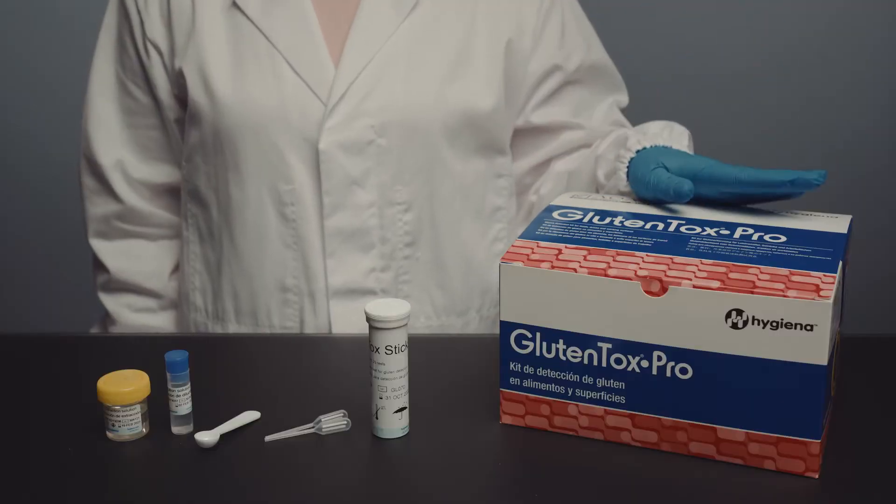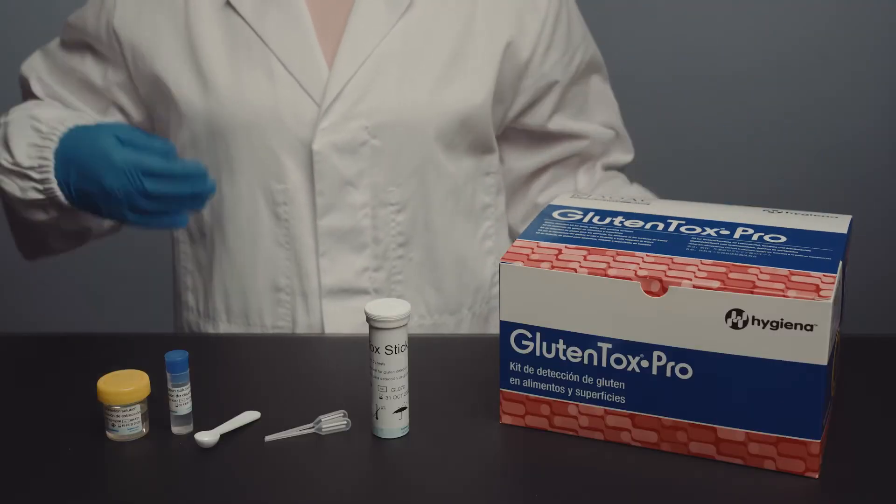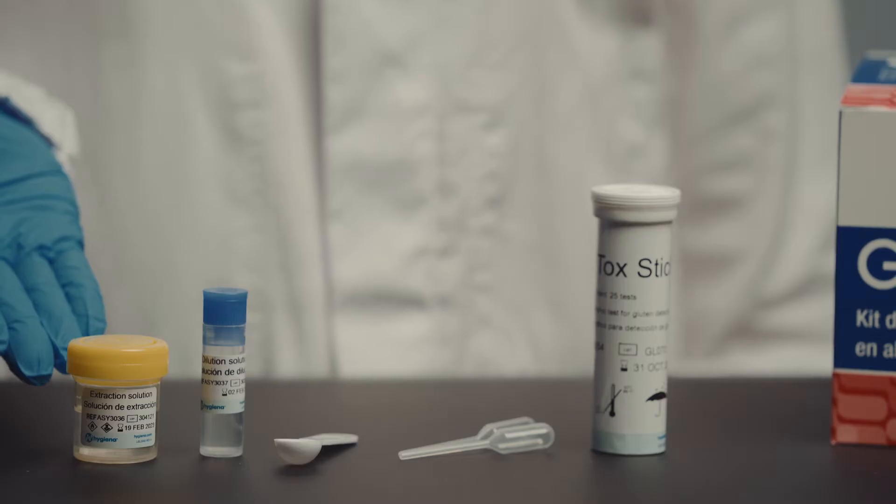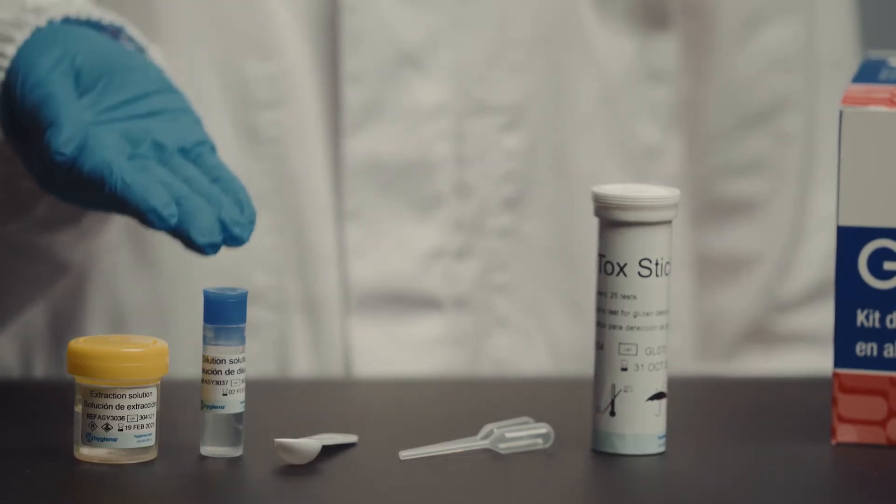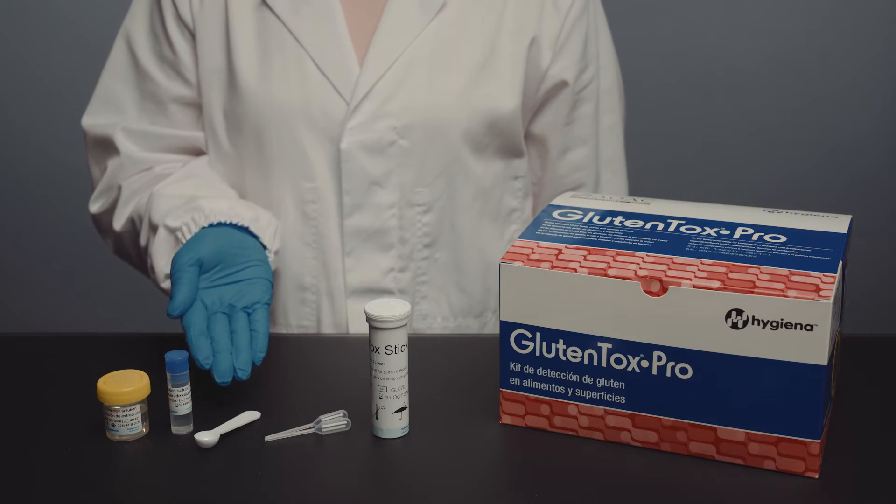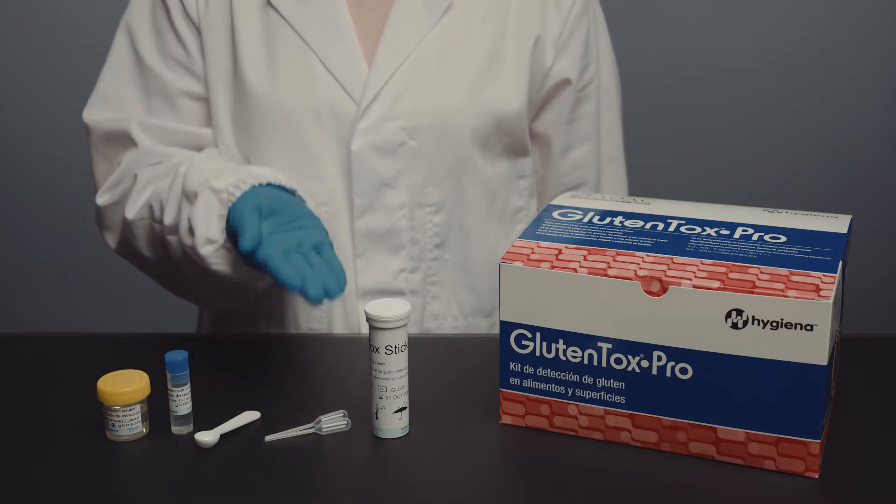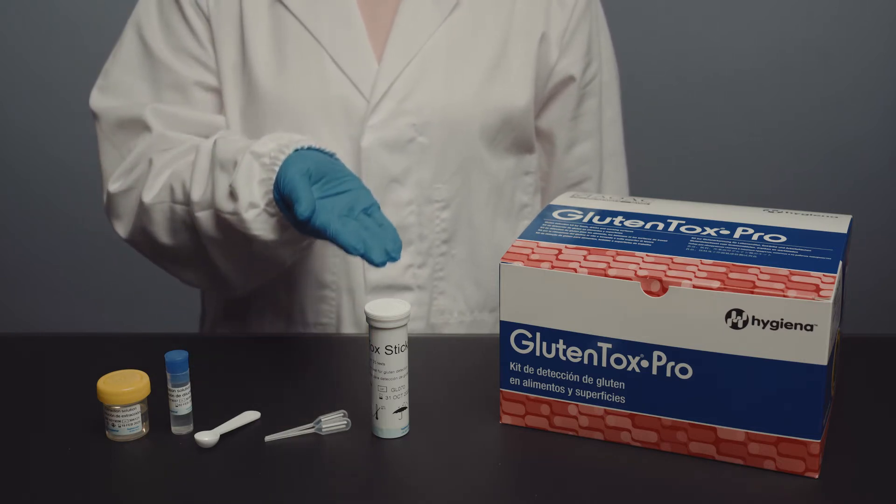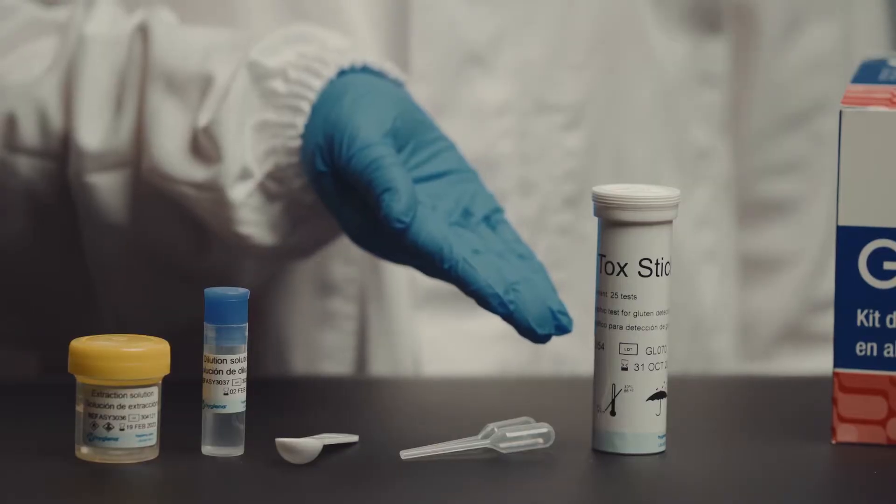Step two, remove the following components from the box: one extraction buffer, a bottle with a yellow cap, one dilution buffer, a bottle with a blue cap, one disposable scoop, two disposable pipettes, and the tube that contains the Gluten ToxPro strips.